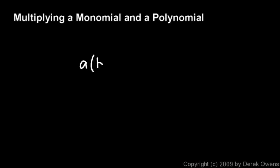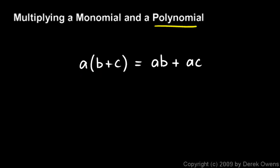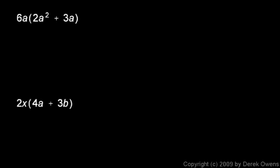Now we'll talk about multiplying a monomial and a polynomial. To do this you have to remember the distributive property, which says a times (b plus c) equals a times b plus a times c. You can think of a as the monomial and b plus c as a little polynomial, so we're multiplying a monomial by a polynomial. The procedure for doing that is to distribute — a gets multiplied by b, then a gets multiplied by c. We can have mathematical expressions instead of just letters or numbers, and we'll look at some examples.